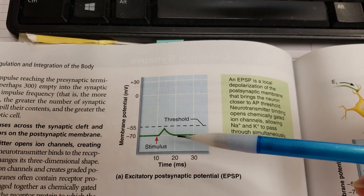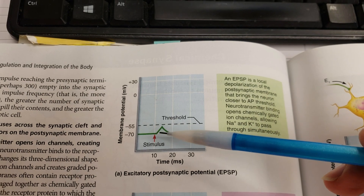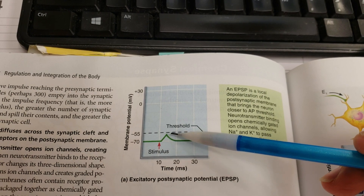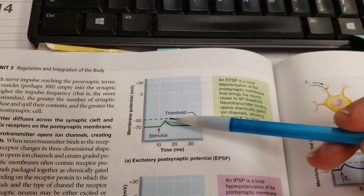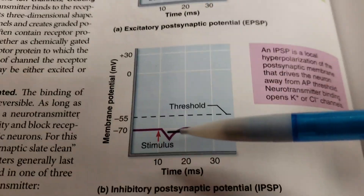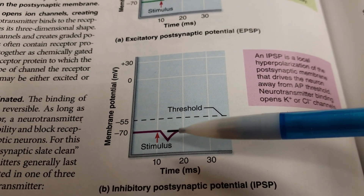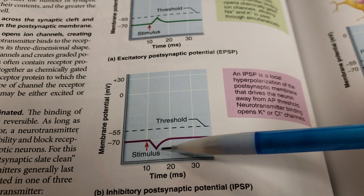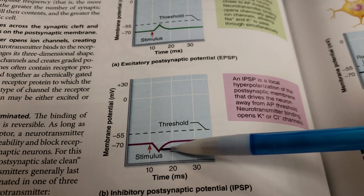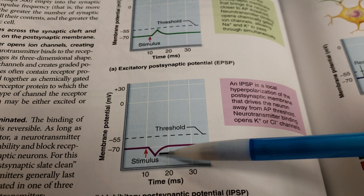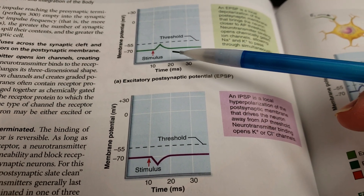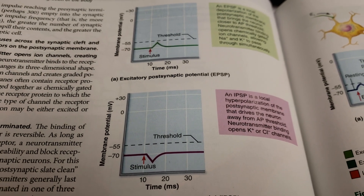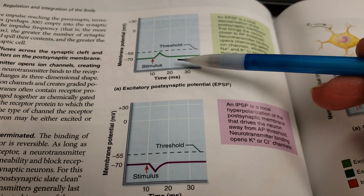Some stimuli take the membrane towards threshold — that's excitatory, and it's called an excitatory postsynaptic potential. However, sometimes a stimulus will take the membrane farther away from threshold, which is inhibitory because it prevents the membrane from reaching threshold — that's an inhibitory postsynaptic potential. These are small graded potential events, and over time the sodium-potassium pump will reestablish the resting membrane potential. Neither one of these alone causes an action potential.